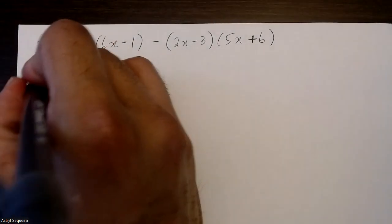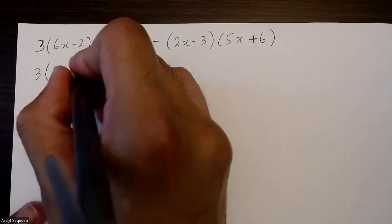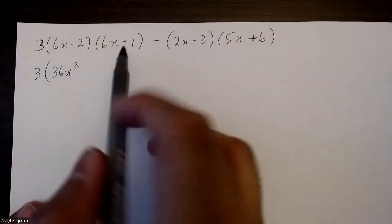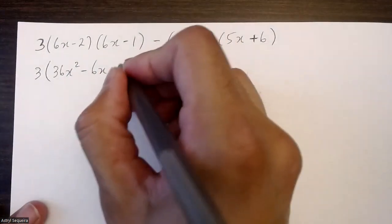6x times 6x is 36x squared. 6x times negative 1 is negative 6x. Negative 2 times 6x is negative 12x.